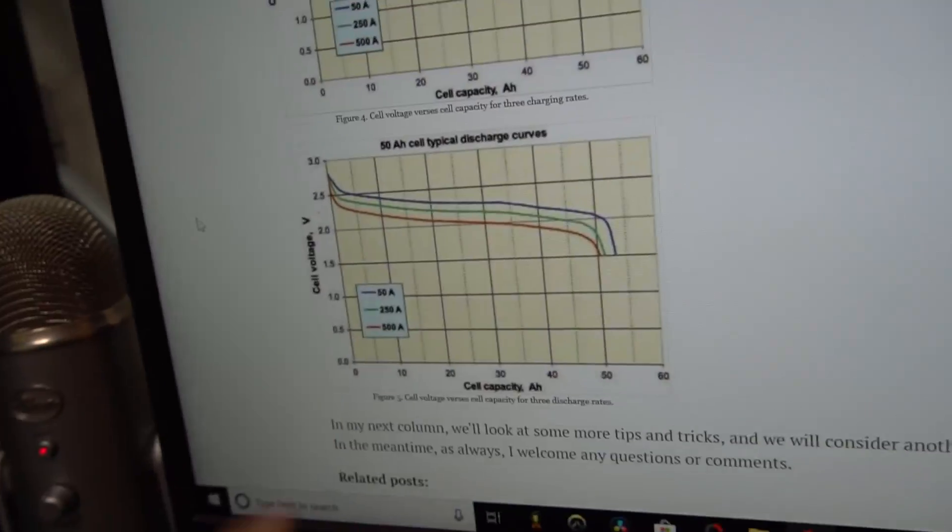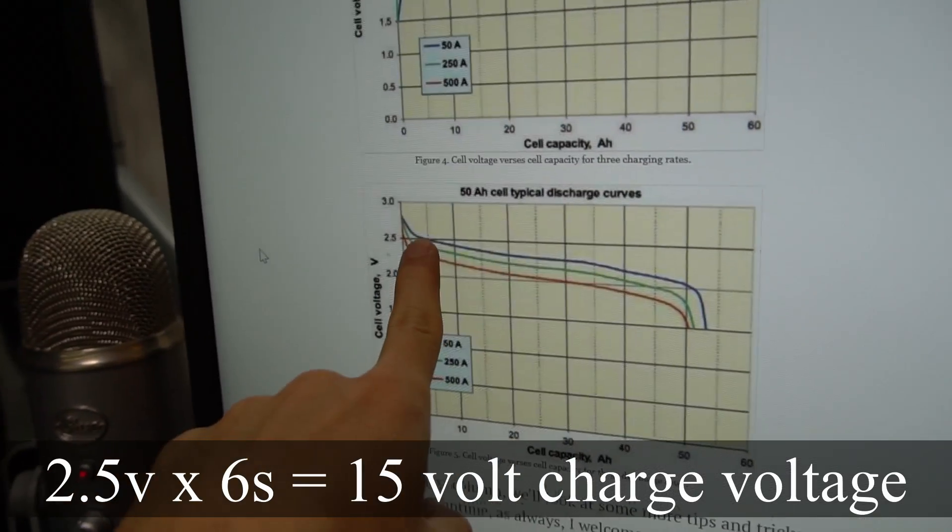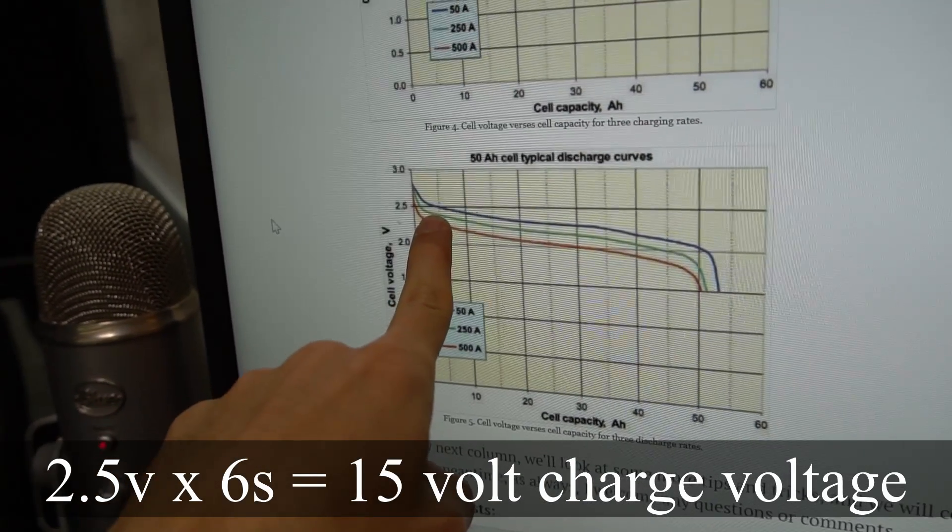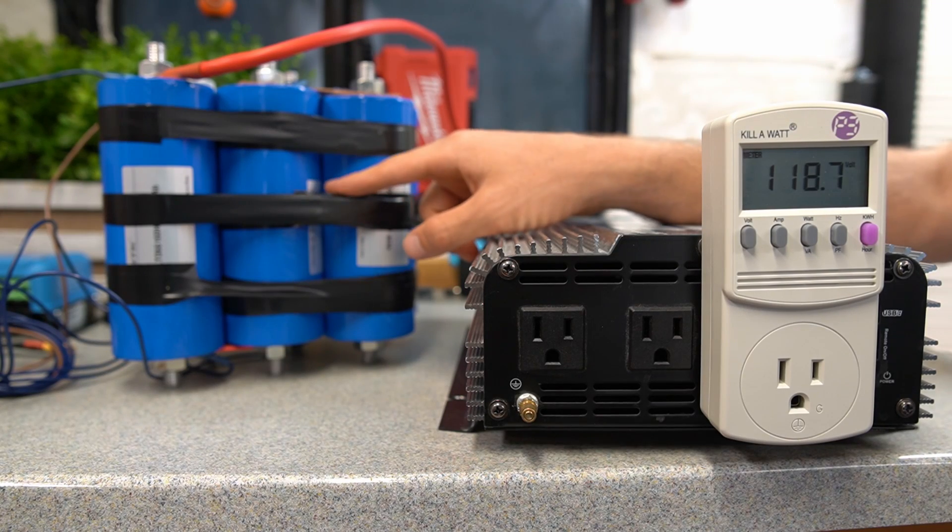Right now I am charging it with the Victron up to 14.9 volts. Going by the discharge curve, it seems like 2.5 volts is like the start of the curve. So I should be able to get a lot of capacity and still be able to use 12 volt appliances.